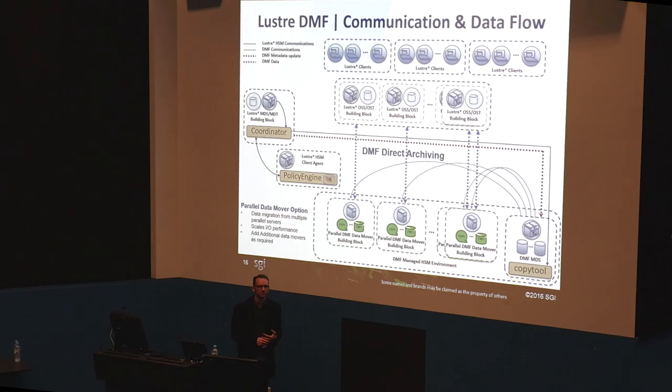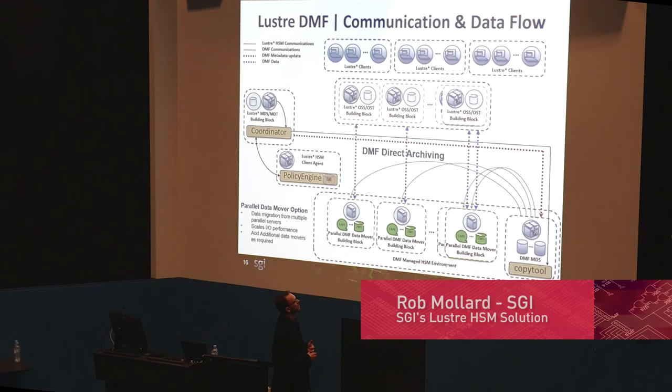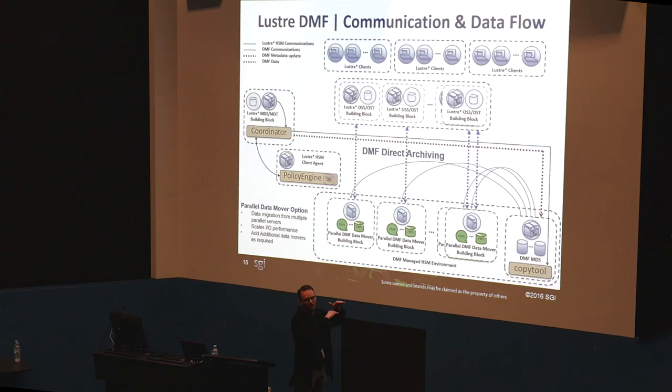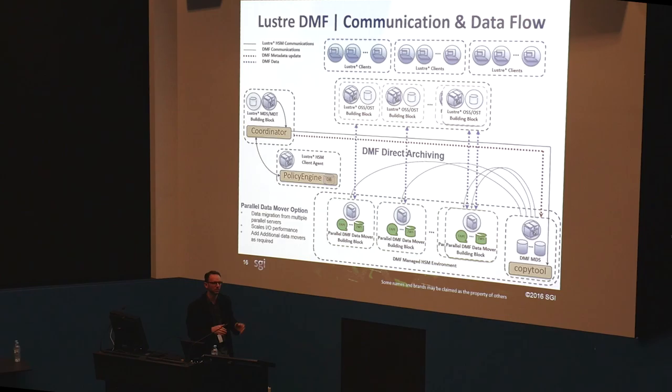On the question of whether Lustre building blocks can also be used for the value models: everything on the diagram is connected to a common InfiniBand, Omnipath, or Ethernet-based fabric, and they're all members of the Lustre cluster — so they all need to be running a client. It's a high-level representation of how communication occurs, but yes, they all need to be on the same fabric.